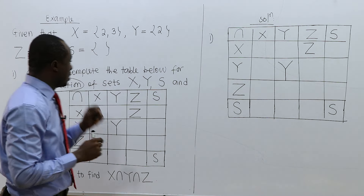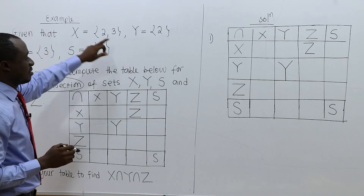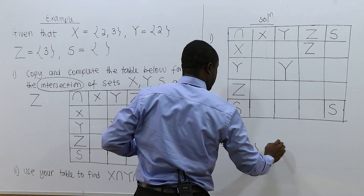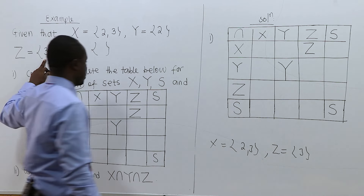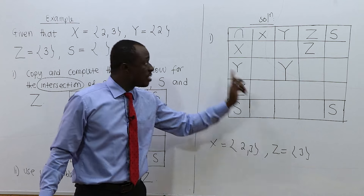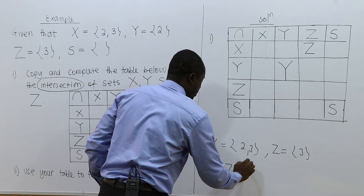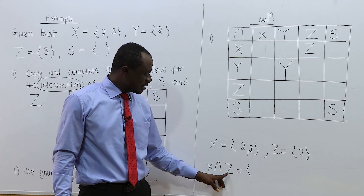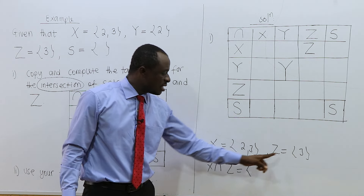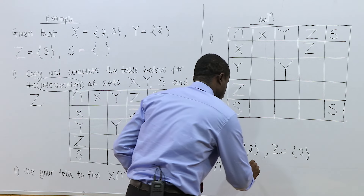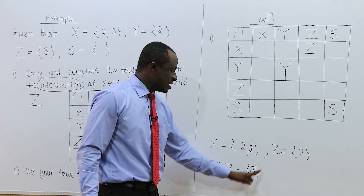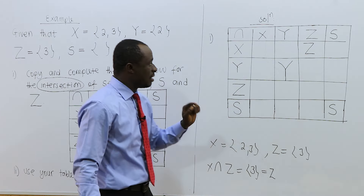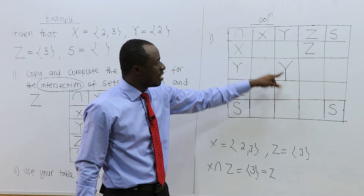Now let's check what we have. X intersection Z — what is X? X is {2, 3}. And Z is {3}. The element common to X and Z is 3. And this 3 is the same as Z. That is why we have Z in that cell.